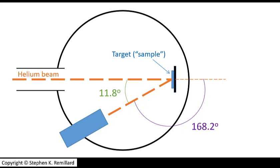SimNRA will make sure that this angle, 168.2, plus this angle, 11.8, plus the angle alpha, which is the angle of incidence, add up to something that makes sense.